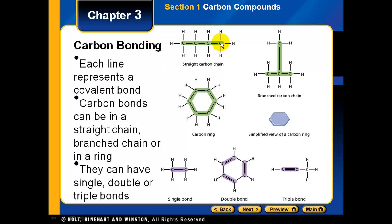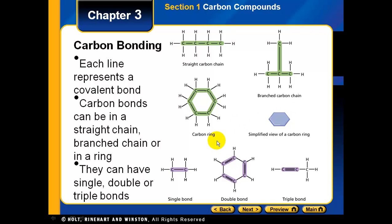Carbon bonds can be in a straight chain, or sometimes the compounds will be branched, making them a little more complex. Sometimes they're in rings, and with rings, sometimes the carbons aren't even written in — in a simplified view of a carbon ring, each corner represents a carbon atom.